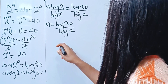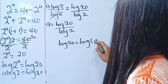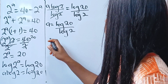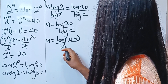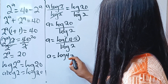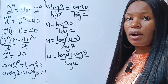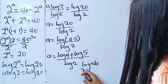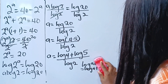But log 20 can be expressed as log 4 multiplied by 5, right? So we have that a is equal to log(4 × 5) divided by log 2. So we have that a is equal to log 4 plus log 5 divided by log 2. Because according to the law of logarithms, log(a × b) is equal to log a plus log b.